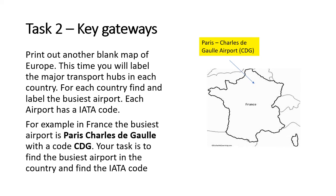Then print out another map — this is where we start to put in the key gateways, which are the transport hubs in each country. For each country, you write down the busiest airport. So you just search for the busiest airport in France, and each country has an IATA code. To find that out, once you've found the airport, you just type in the IATA code followed by the airport name on the internet and it will give you the code, which is generally a three-letter code.